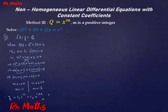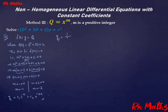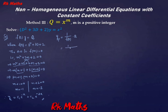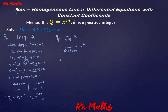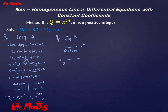The particular integral: yₚ = (1/f(D))·Q, that is 1/(D² + 3D + 2) · x². This method uses the constant term. The constant 2 is factored out.